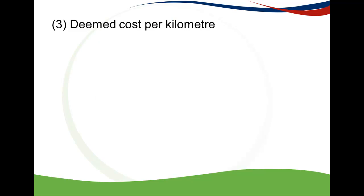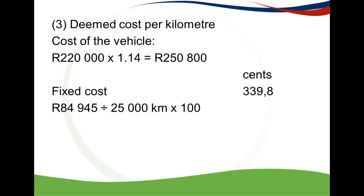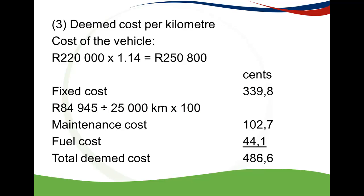For the deemed cost per kilometre, we first need the cost of the vehicle to find the correct category in the tax table. Looking at the tax table, the fixed cost is 84,945 Rand. Since this is not a cost per kilometre, we divide it by the total kilometres of 25,000. The maintenance cost and fuel cost are given in cents per kilometre. Adding these together gives a total deemed cost of 486.6 cents per kilometre.